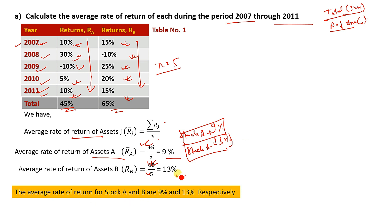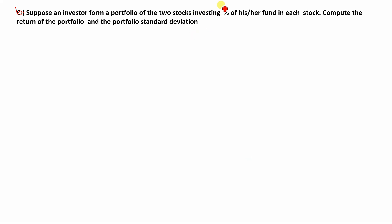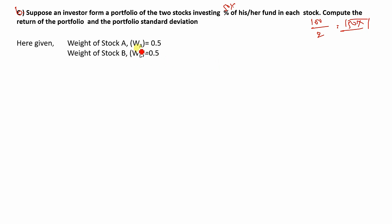The average rate of return of Stock A and Stock B is 9% and 13% respectively. These are the average rates of return. For the portfolio, if you invest 50% in Stock A and 50% in Stock B, the weights are equal. The weight of Stock A is 0.5 and the weight of Stock B is 0.5.